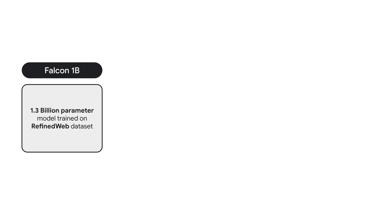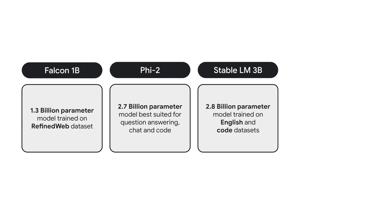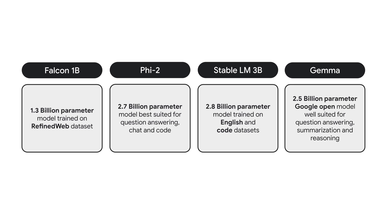Currently, the MediaPipe LLM inference API supports the following models: Falcon 1B, a 1.3 billion-parameter causal decoder-only model trained on the RefinedWeb English dataset; Phi2, a 2.7 billion-parameter transformer model best suited for question-answer, chat, and code tasks; StableLM 3B, a 2.8 billion-parameter decoder-only model trained on English and code datasets; and last but not least, Gemma 2B, the 2.5 billion-parameter Google open model that is well suited for a broad range of tasks such as question answering, summarization, and reasoning.